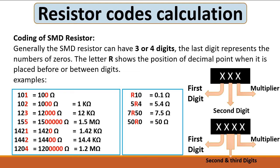Sometimes instead of R you can find K or M — the same working principle. For example, 'K10' means 0.1 kilo-ohms, and 'M10' means 0.1 mega-ohms. '5K4' means 5.4 kilo-ohms, and '5M4' means 5.4 mega-ohms. This is how you calculate SMD resistor codes.